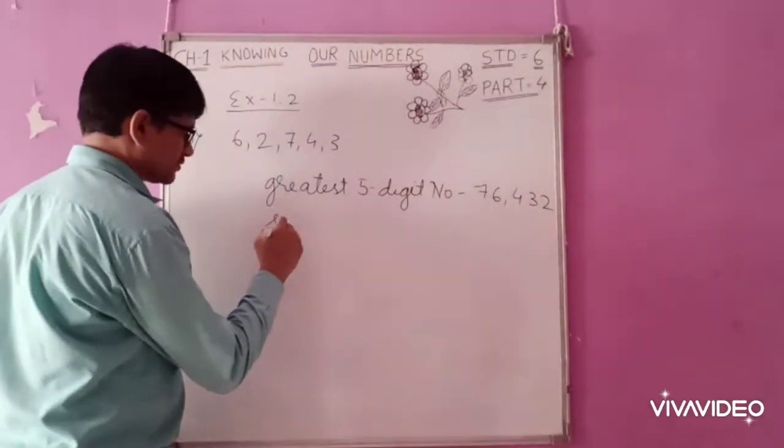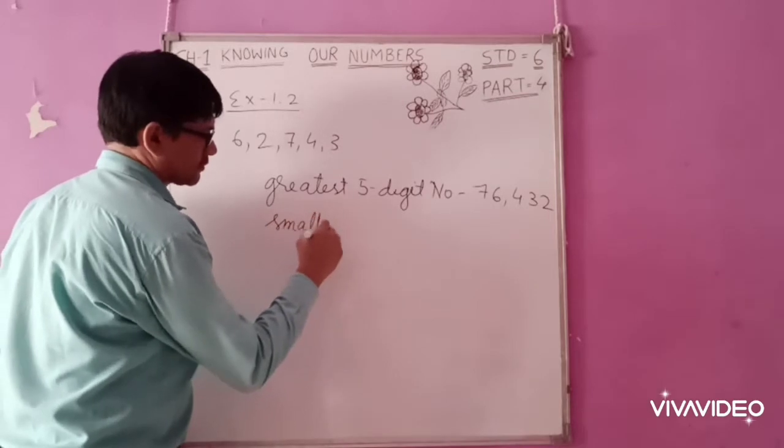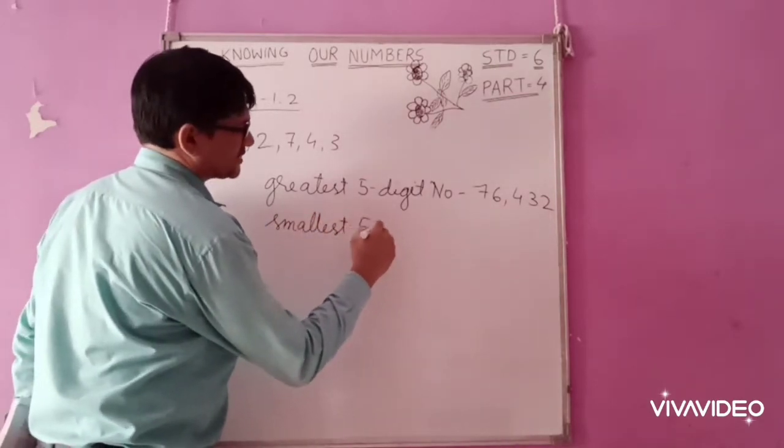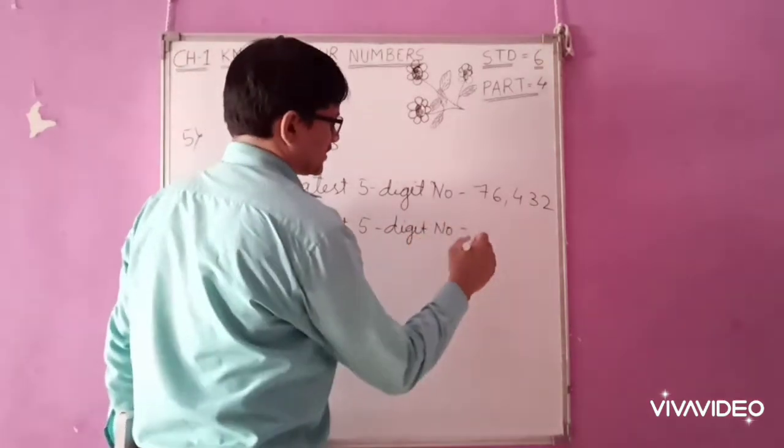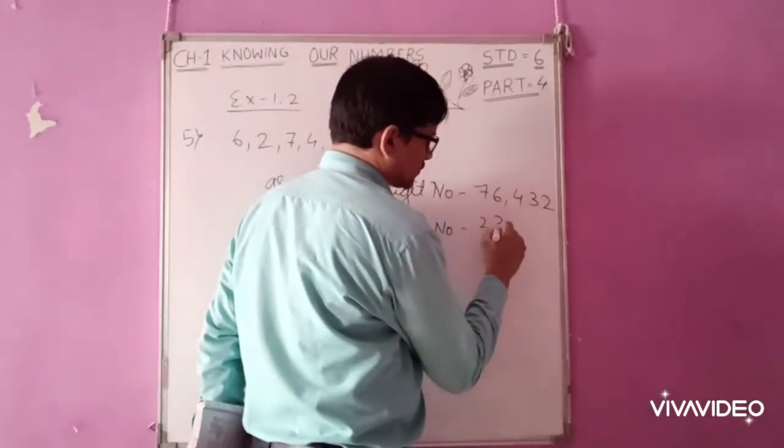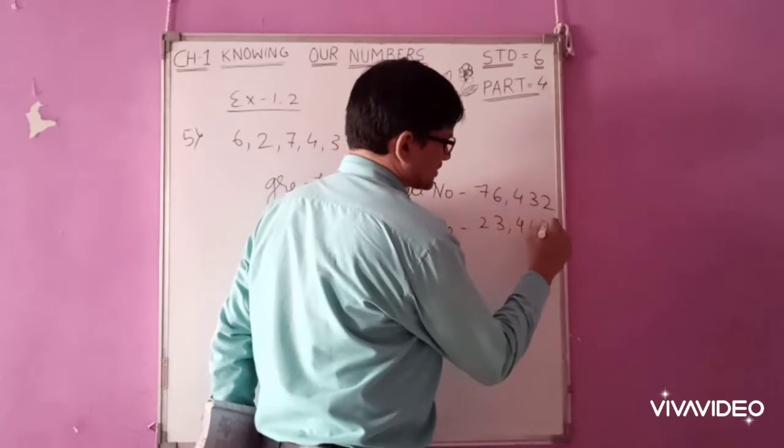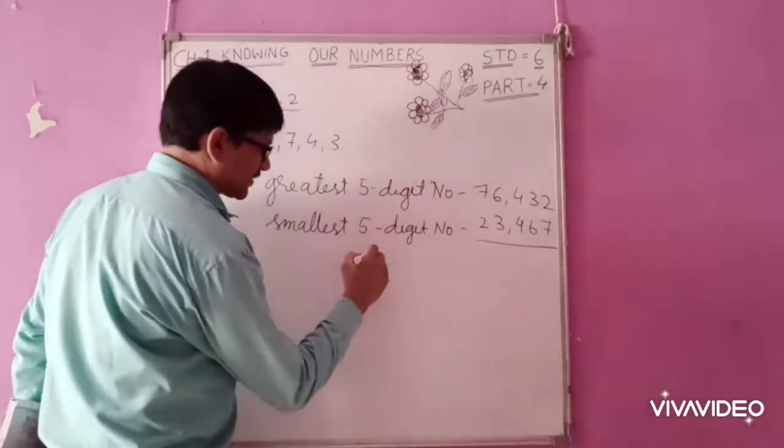Smallest 5 digit number that can be formed is 2, 3, 4, 6, 7. Then, find the difference.